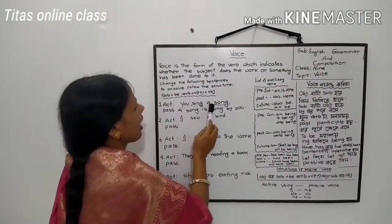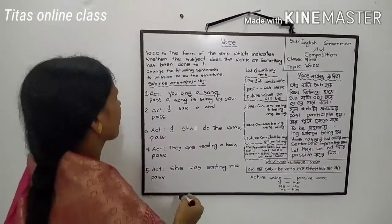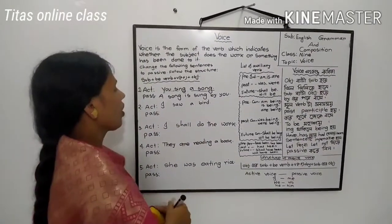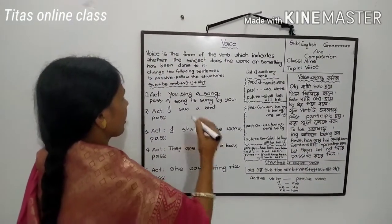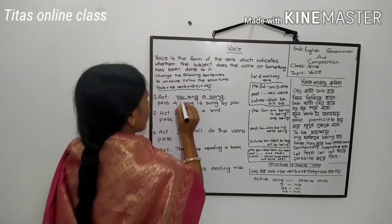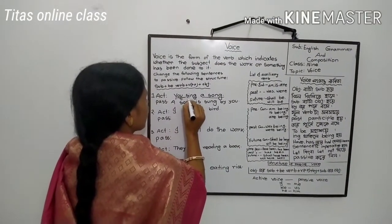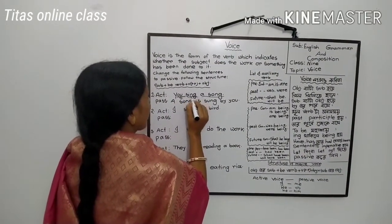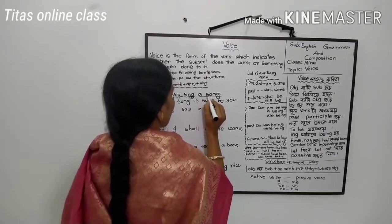Notice the sentence: 'You sing a song.' Here we identify that 'you' is subject, 'sing' is verb, and 'a song' is object.